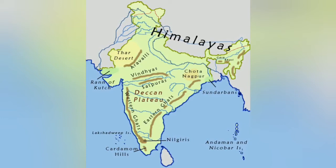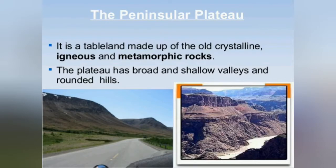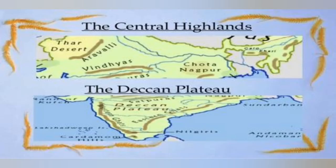The Peninsular Plateau is a tableland composed of old crystalline, igneous and metamorphic rocks. It was formed due to the breaking up and drifting of Gondwana land. Thus, it is a part of the oldest landmass. The plateau has broad and shallow valleys and rounded hills. This plateau consists of two broad divisions: the Central Highlands and the Deccan Plateau.